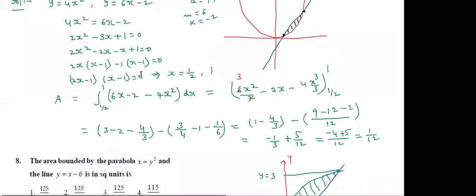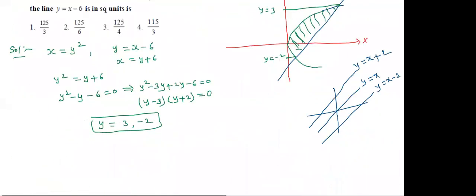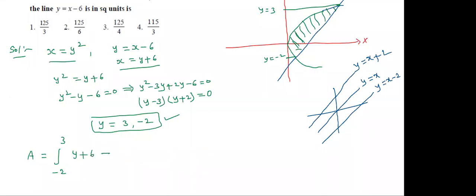Required area A = ∫ from -2 to 3. The limits are in y values, so functions must also be in terms of y. The straight line x = y + 6 is the upper curve, and the parabola x = y² is the lower curve. So integrate (y + 6 - y²) dy from -2 to 3.